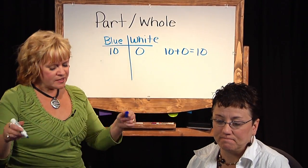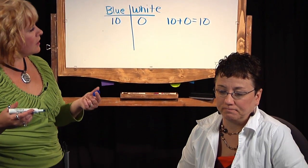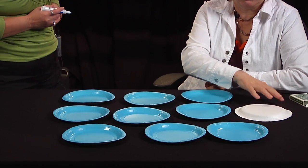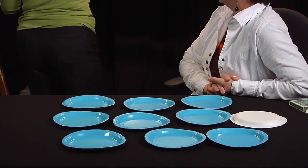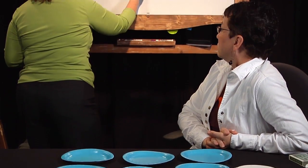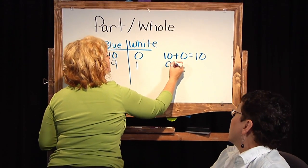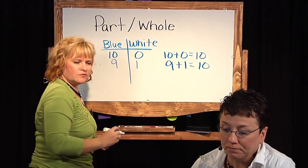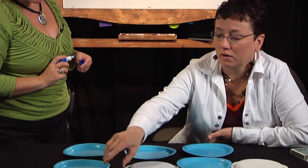I want you to think of another way you can flip those plates to make another combination of ten. I'm just going to turn one this way — one white and nine blue. Nine plus one equals ten.